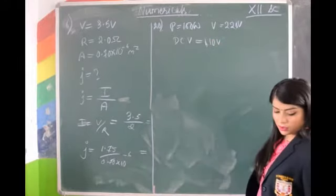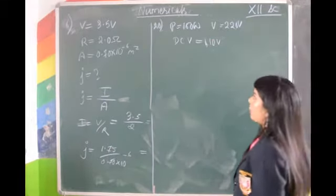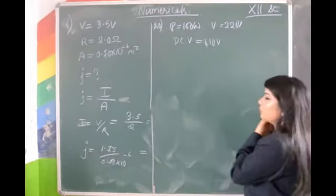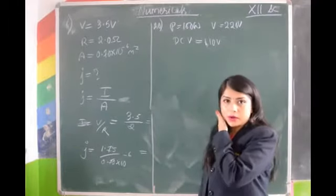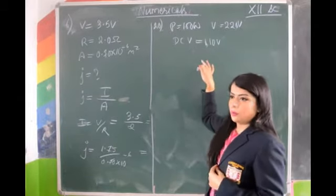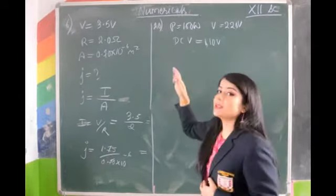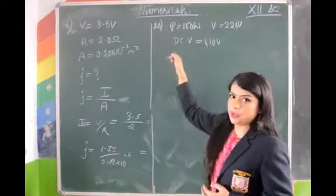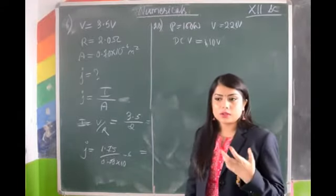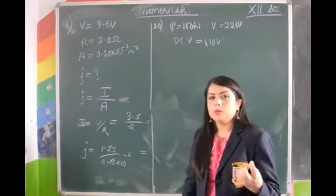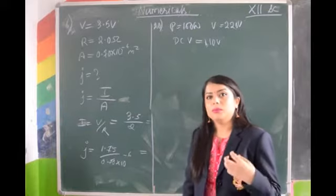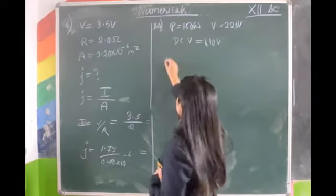You might think that power is already given, so what are we finding? But the bulb works on 220V and its rated power is 100W; however, the DC source connected is only 110V. So how much power is consumed when the voltage is reduced? We need to find that. Whenever the bulb is connected to any circuit, the bulb will act as a resistance — because of the resistance in the bulb, the bulb glows.